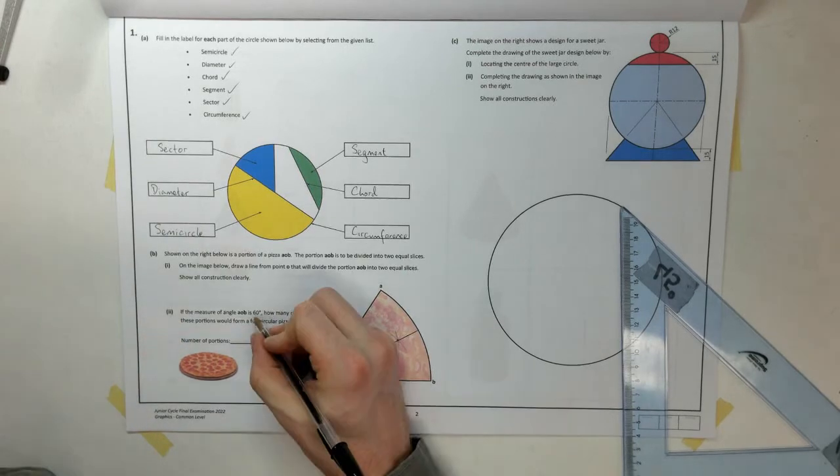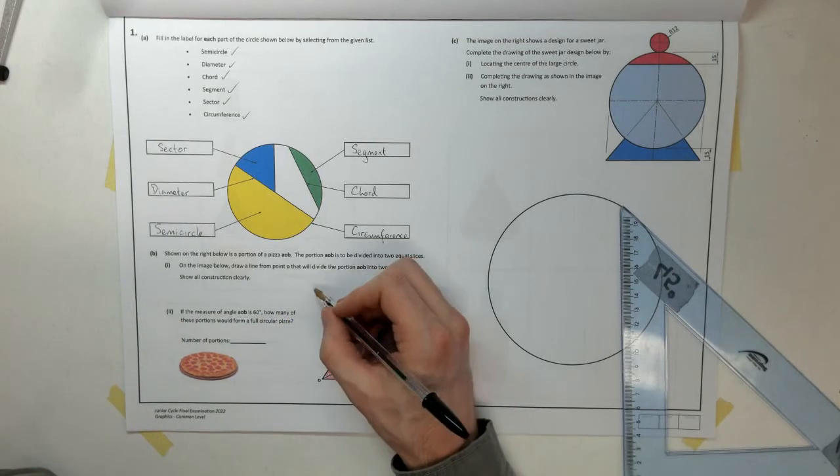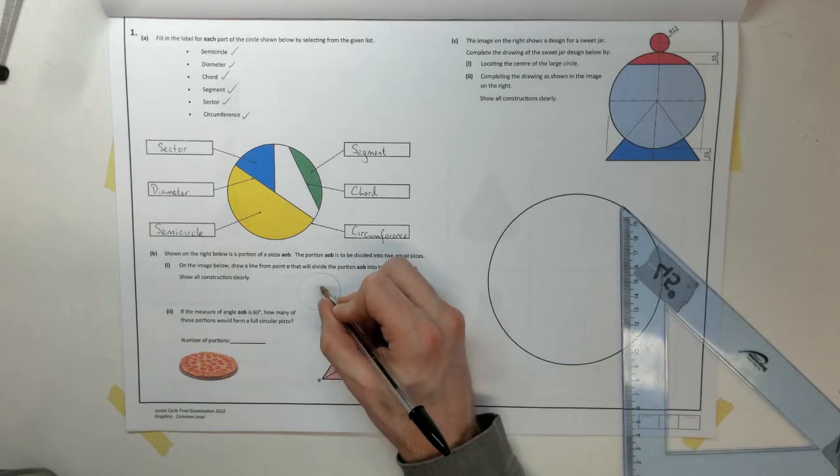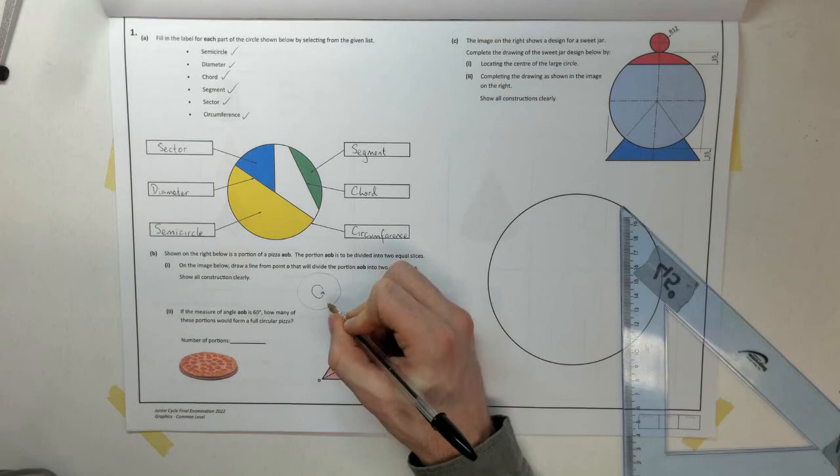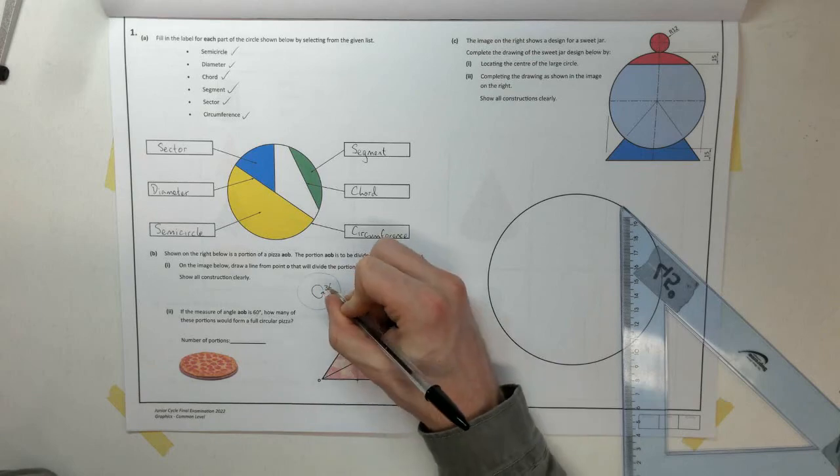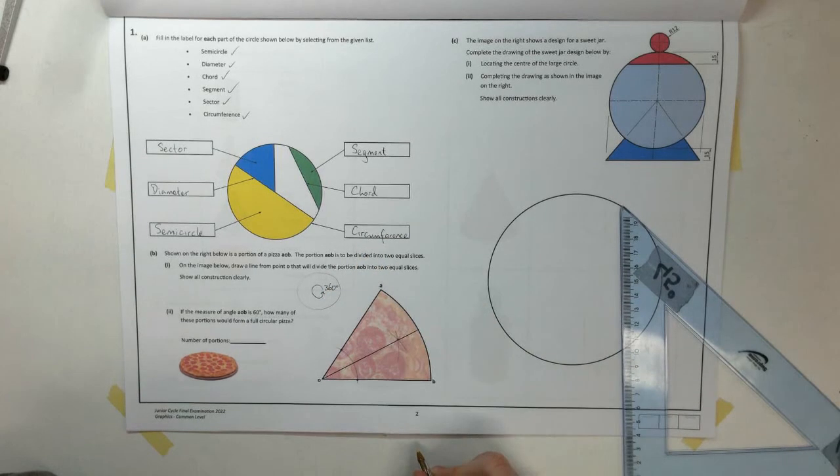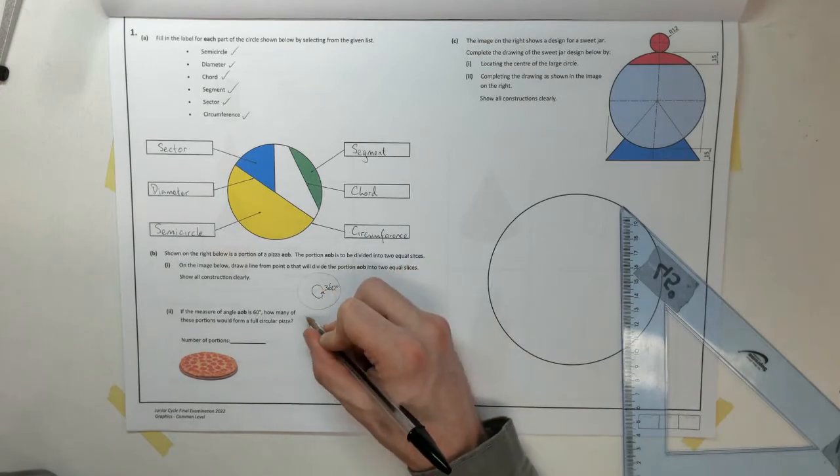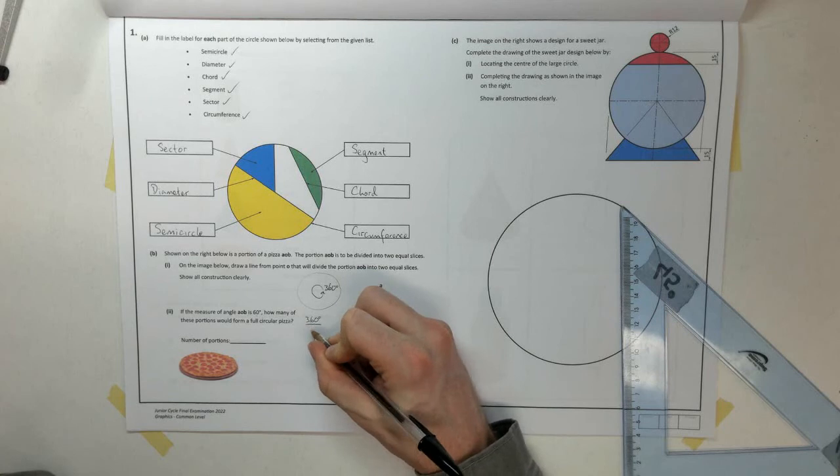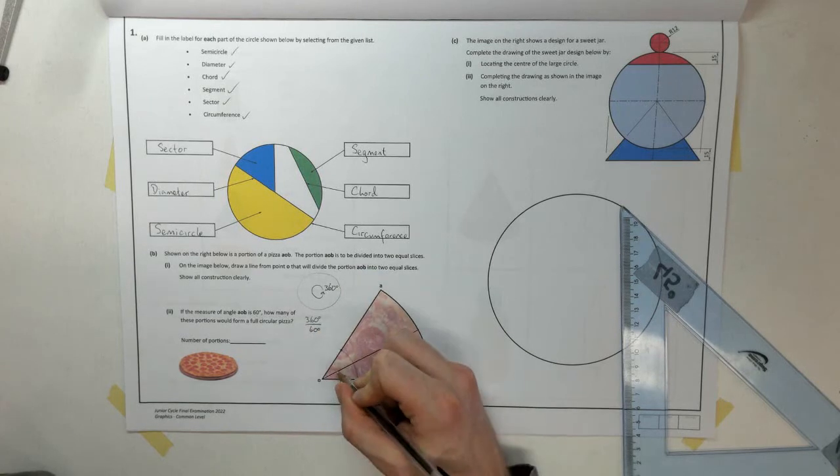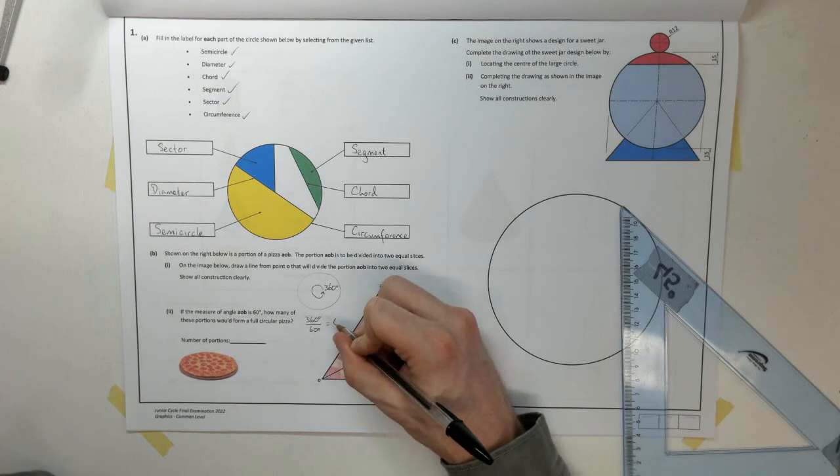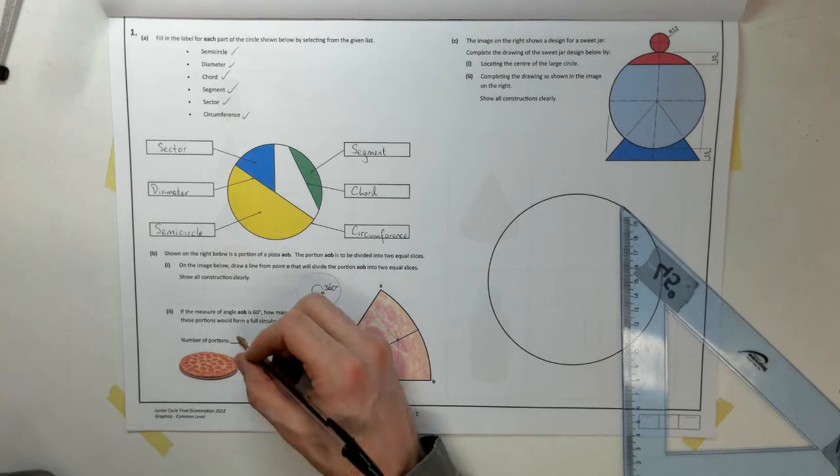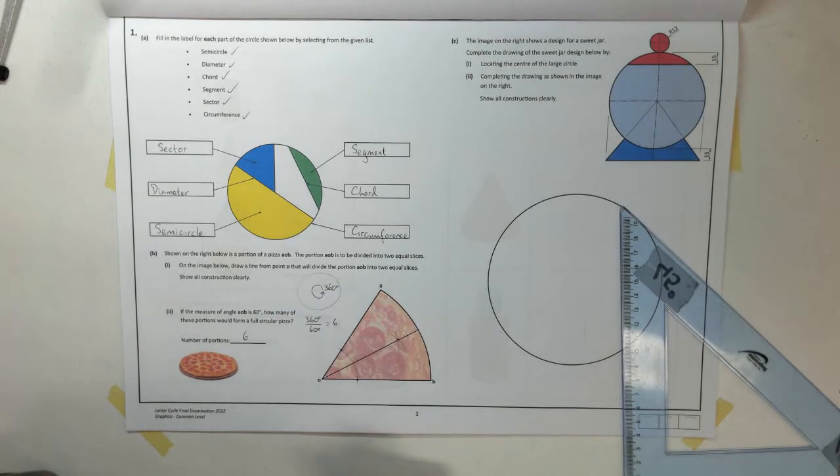A full pizza, so I'll find my pizza here. A full pizza going all the way around is going to be 360 degrees. But I'm only going 60 degrees. So, we're going to divide 360 degrees by 60 degrees, and that is equal to 6. So, the number of portions, the number of slices I'm going to get there is 6. Six slices.